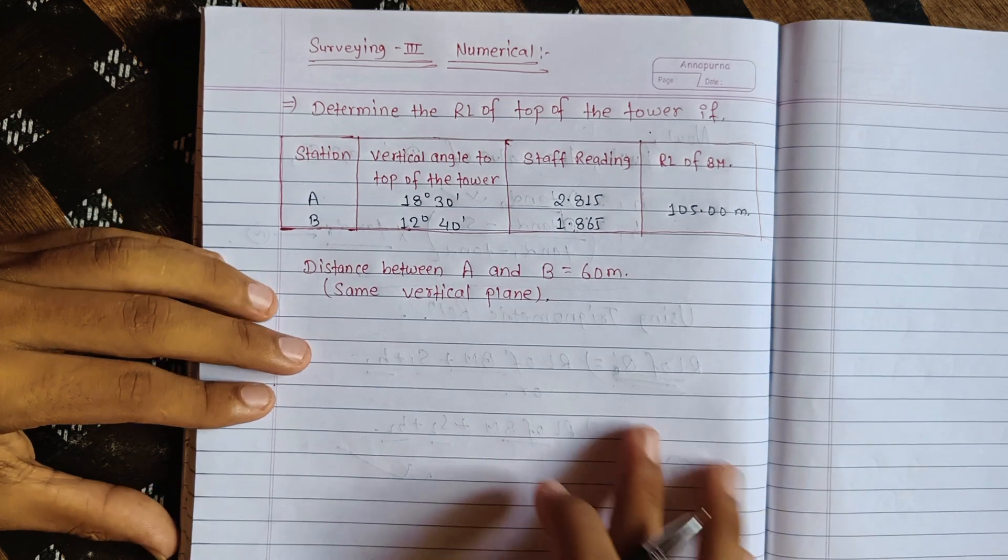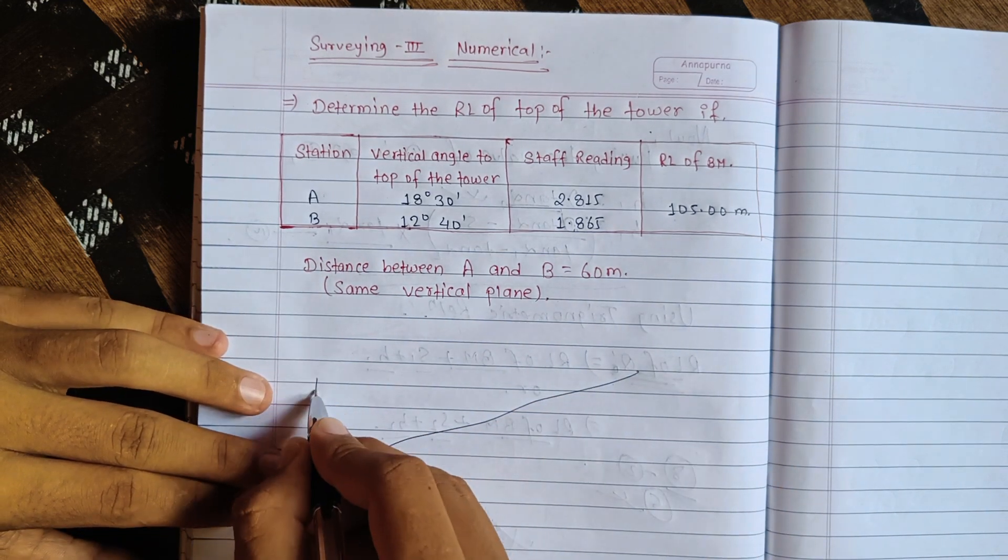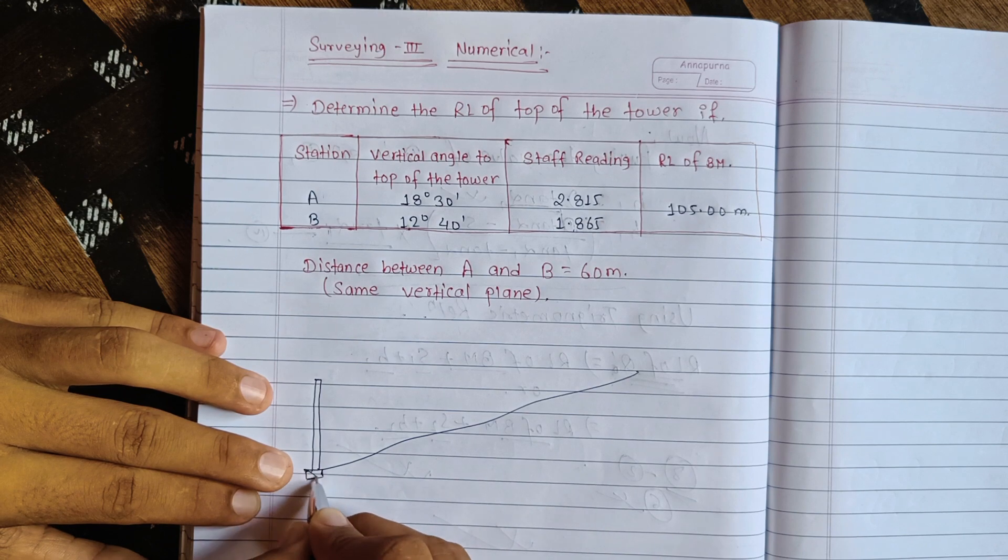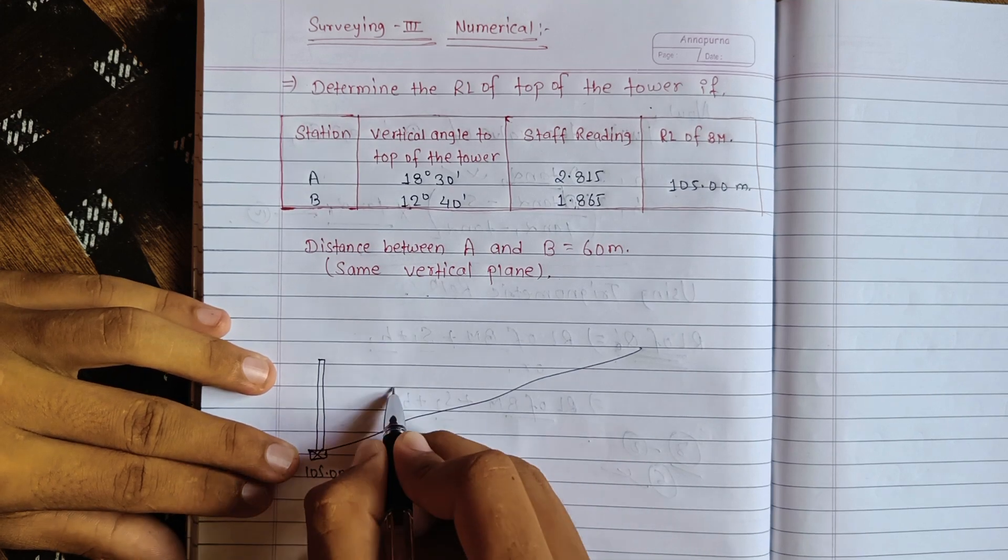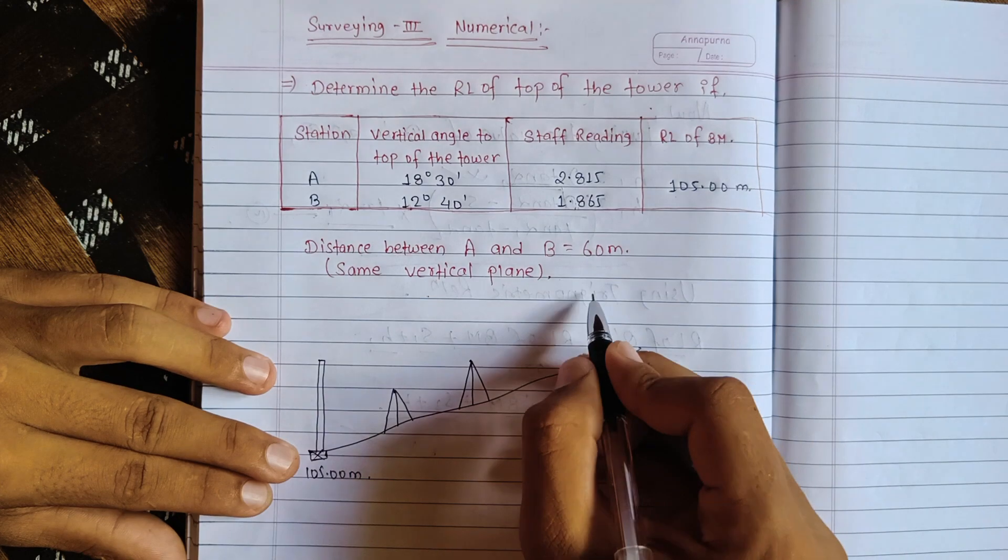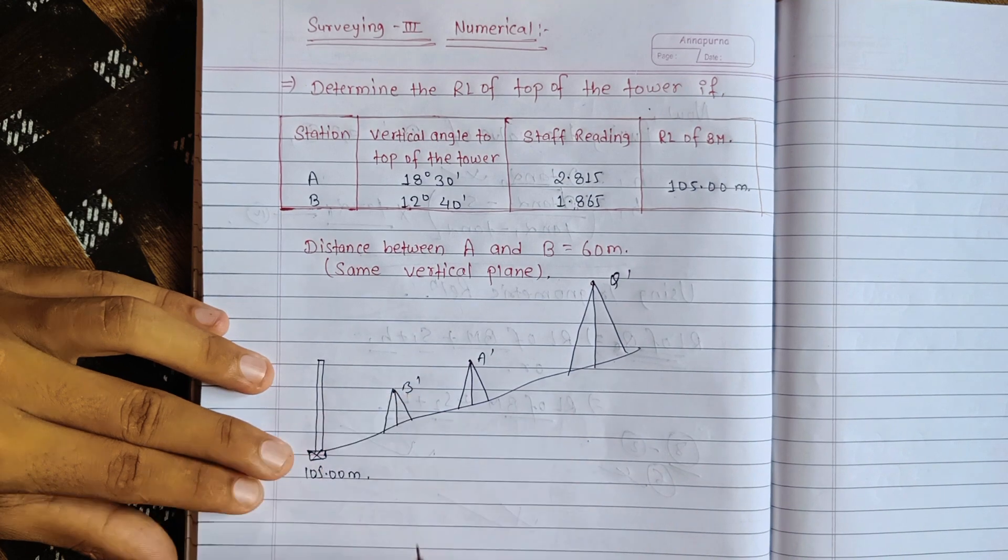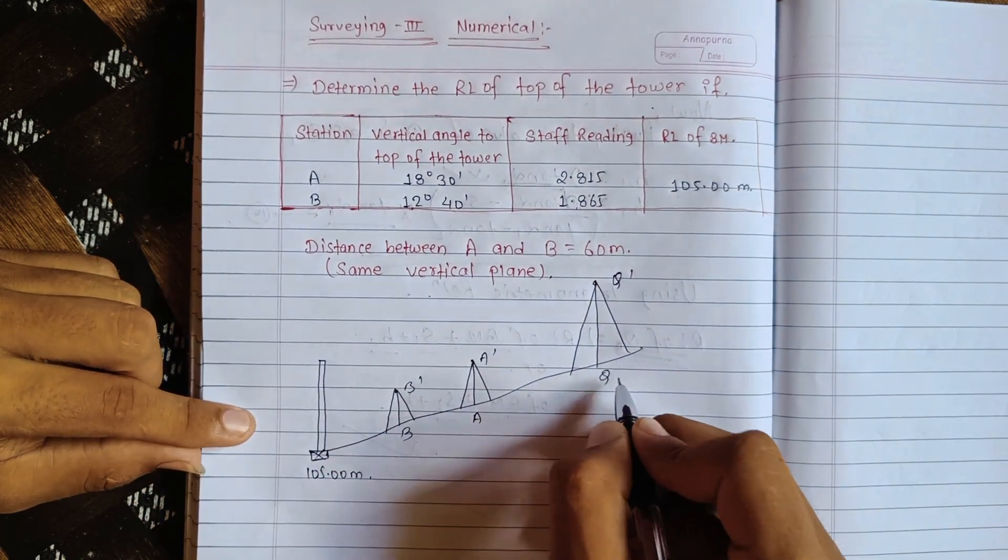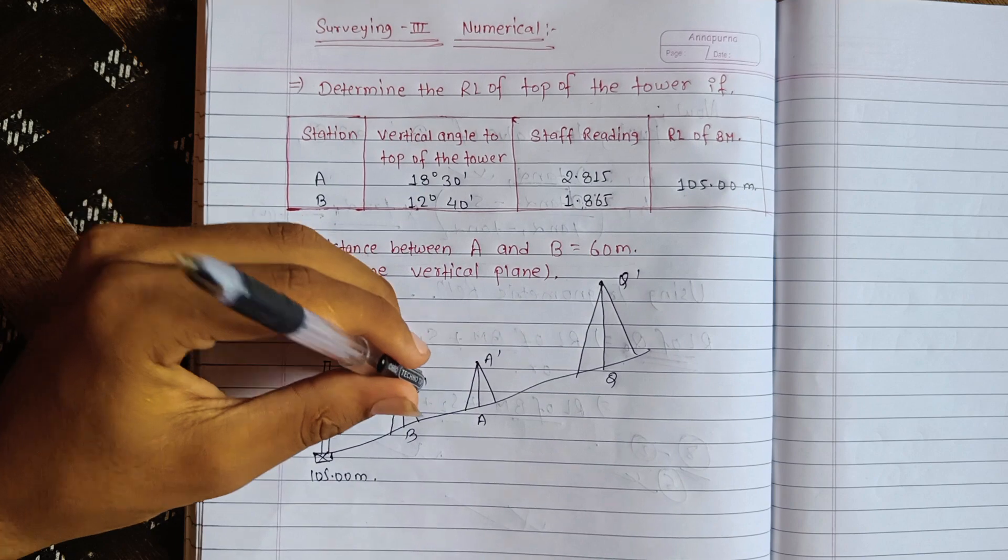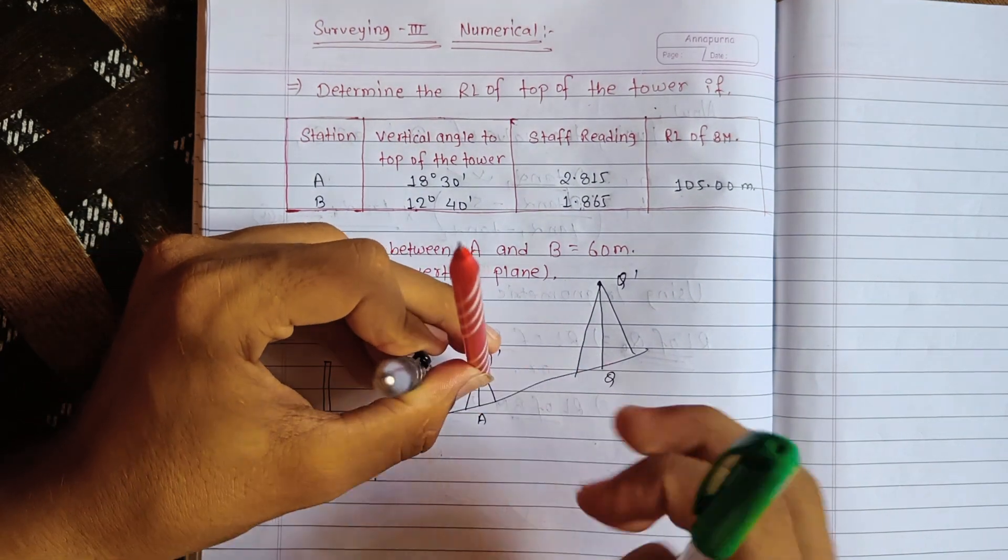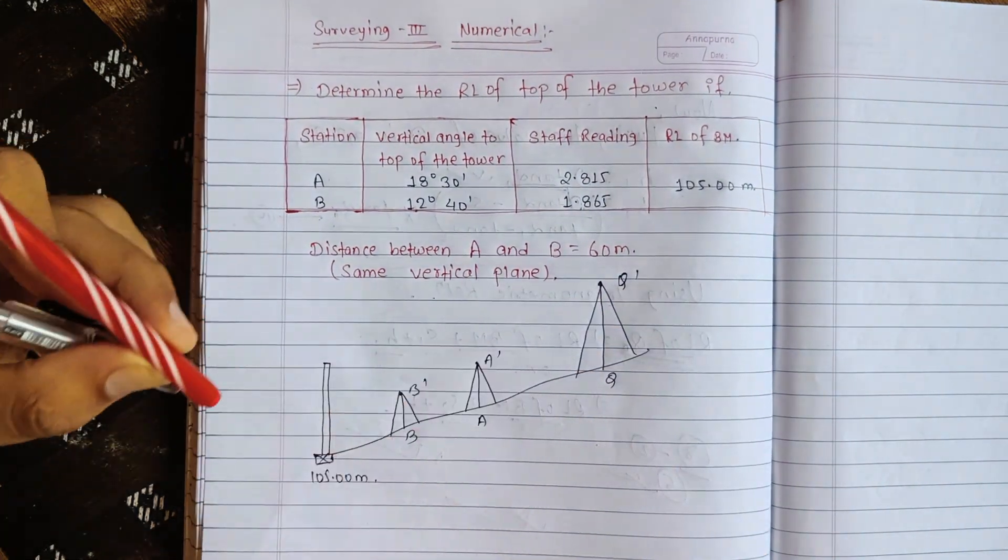Same vertical plane means A and B are on one line in the same vertical plane. This is key to understanding. A is at one point, 100.00 meters at the benchmark. It's the instrument height. A and B are on the same vertical plane, the same line, one of the ways to understand this.